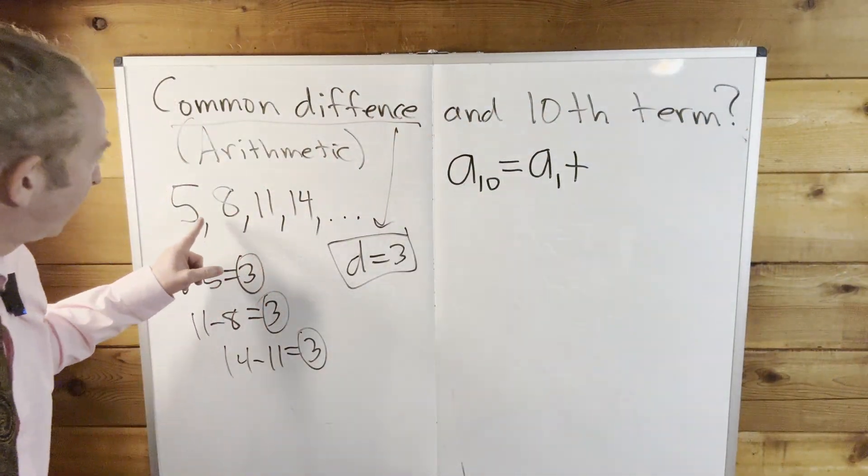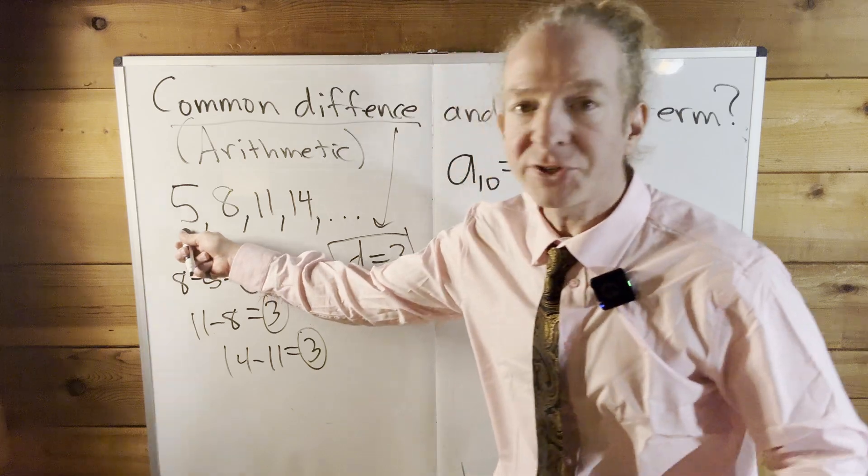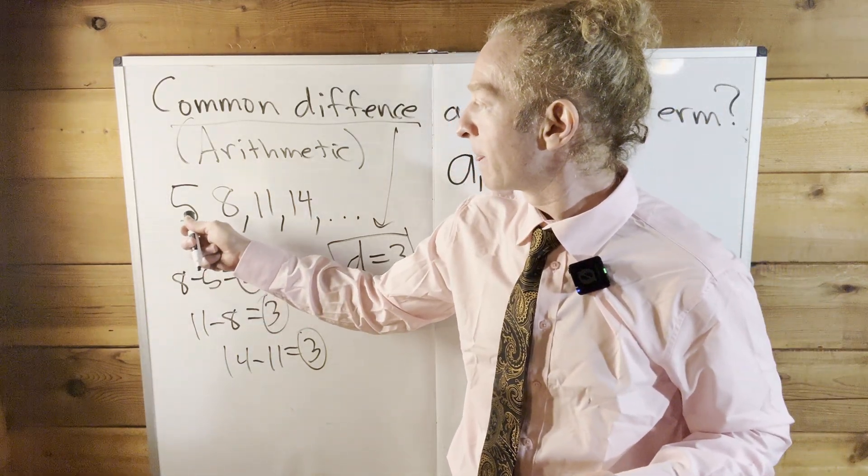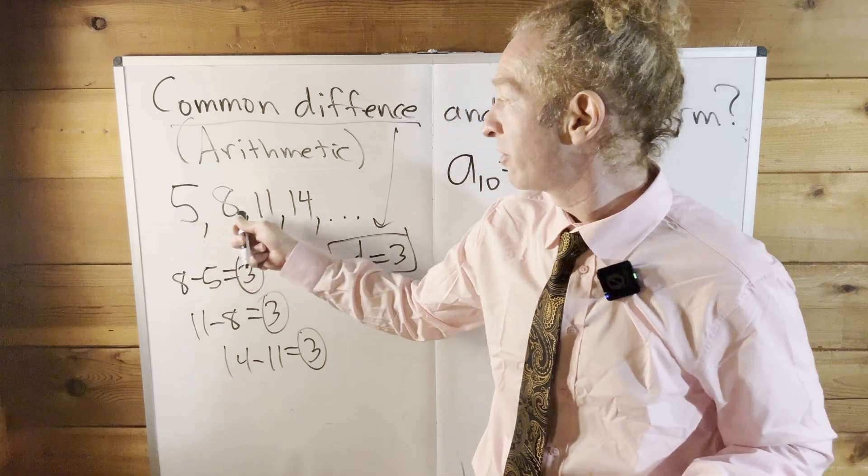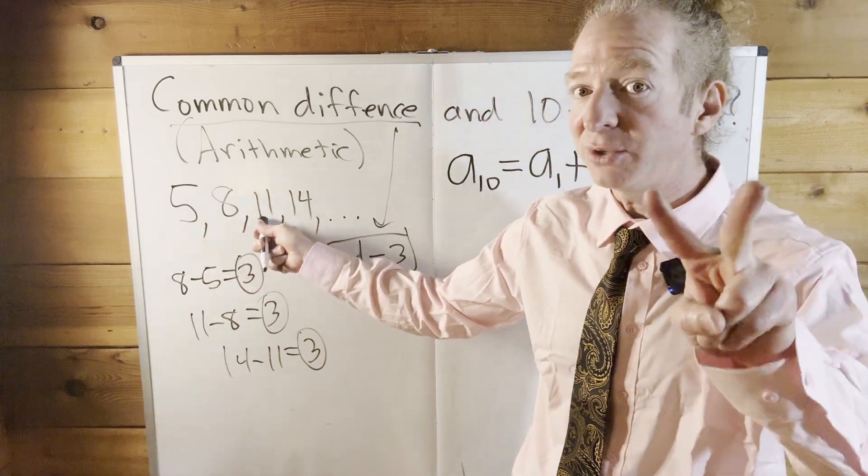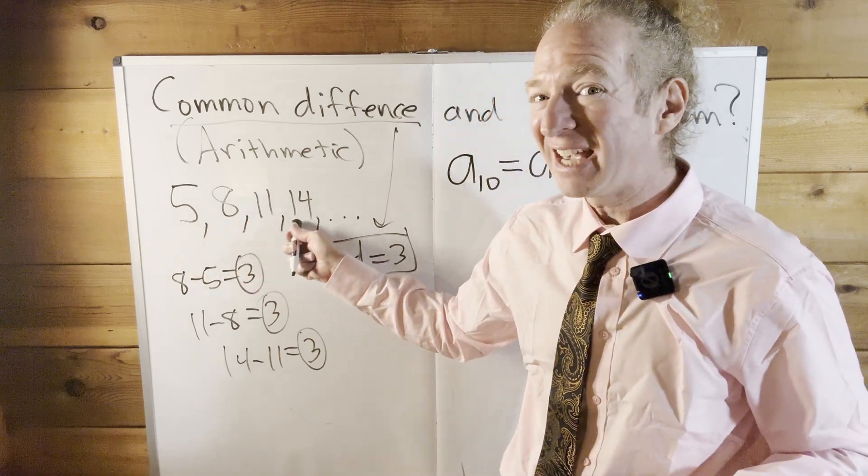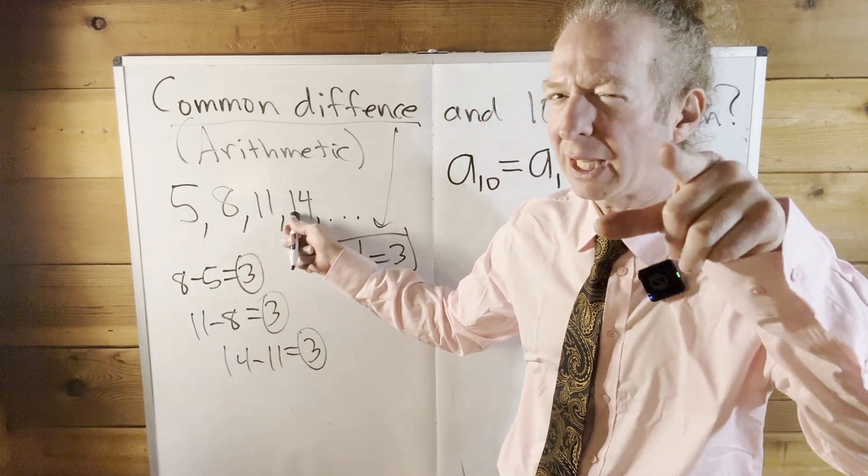Let's think about that. If you're going from the first term to the second term, you have to add it one time. If you're going from the first term to the third term, you have to add it two times. If you're going from the first term to the fourth term, you have to add it three times. Notice every time it's one less.